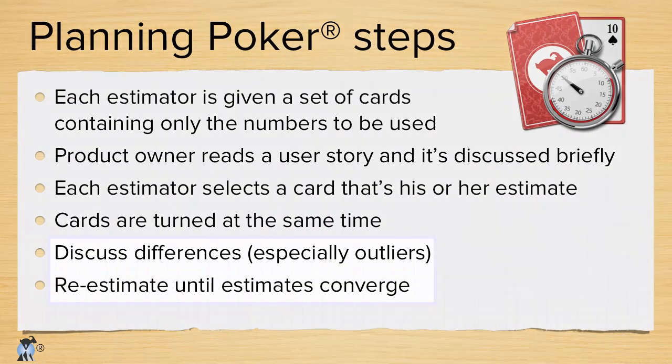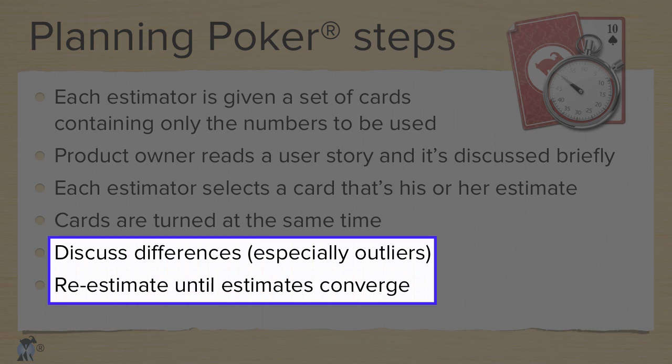If everyone is holding up the same number, we're done — write that number down as the estimate and move on. But if the numbers are different, we discuss it and then estimate again.